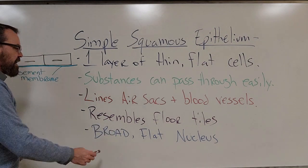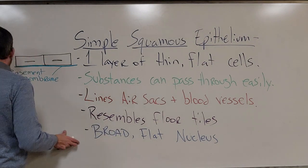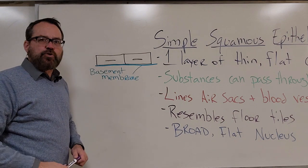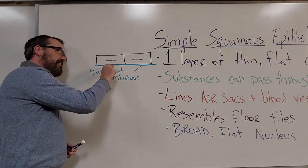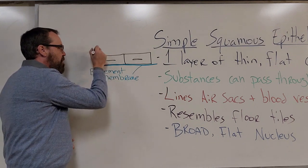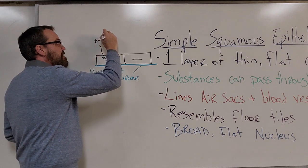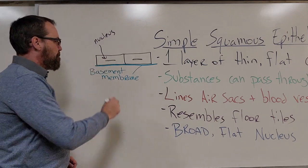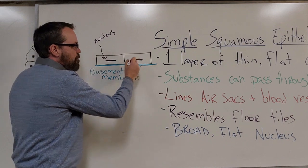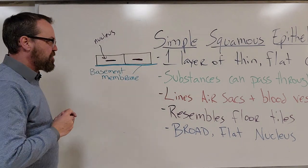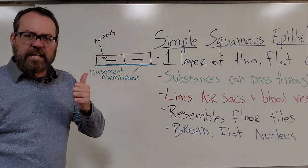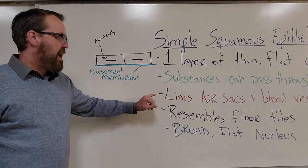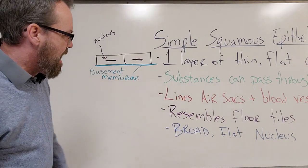Simple squamous cells resemble floor tiles and have a broad, flat nucleus. Here is a layer of simple squamous epithelium — thin, flattened cells coming down to the basement membrane at the bottom, with a flat nucleus in the middle. This broad, flat nucleus is a dead giveaway for simple squamous. We've got to know it's one layer of thin flat cells, that it resembles floor tiles, that it has a broad flat nucleus, and that we find it lining the air sacs and blood vessels.